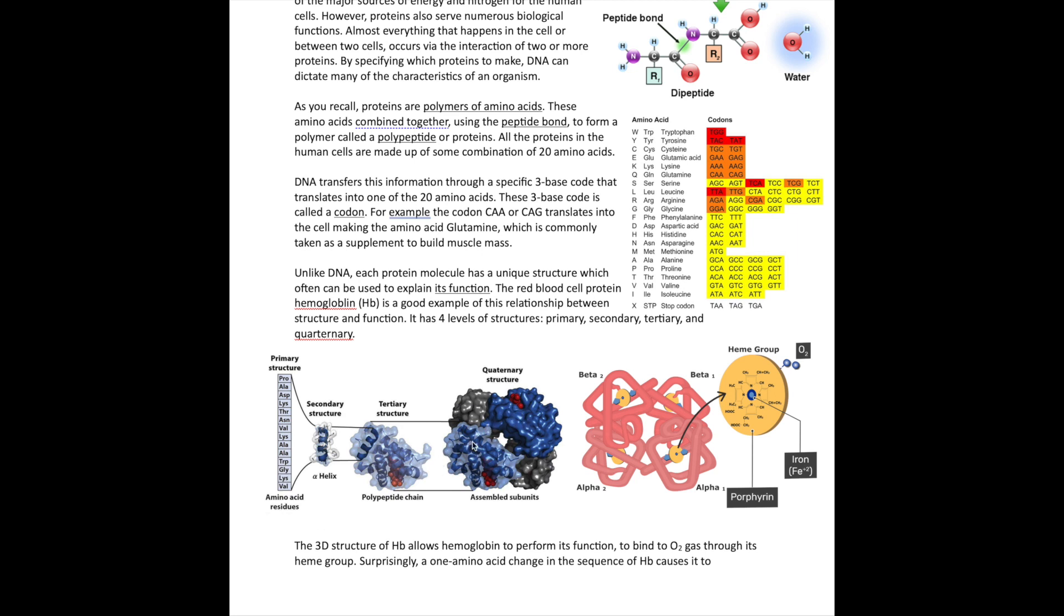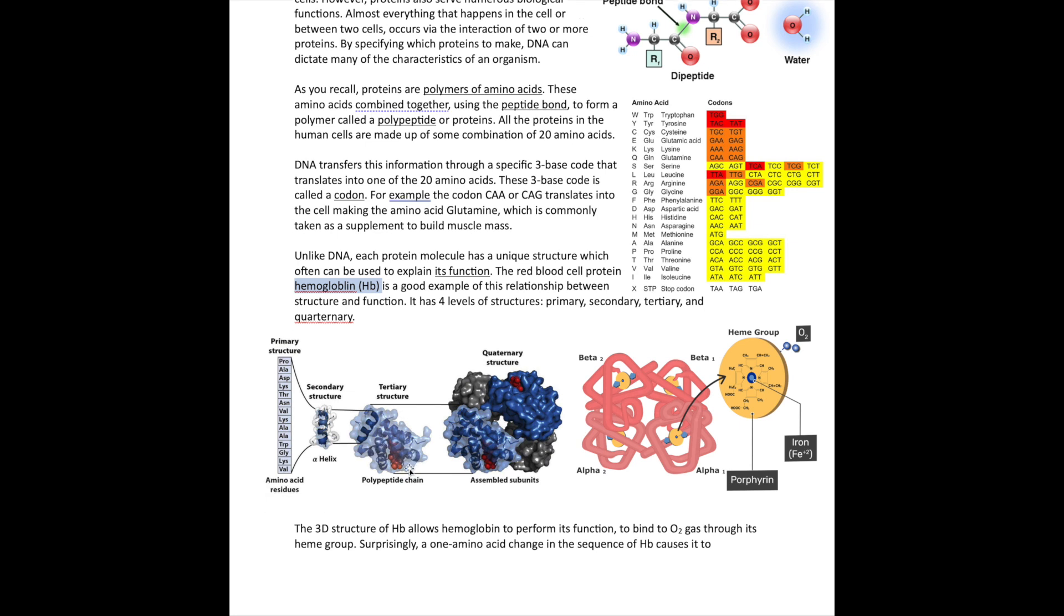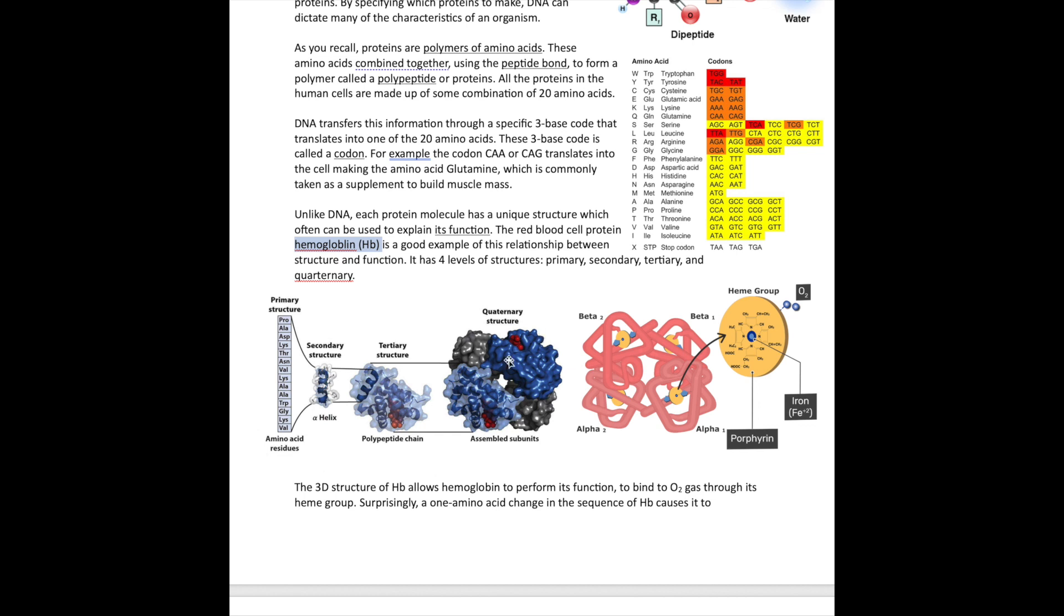In this particular protein, hemoglobin, a protein found in red blood cells that's responsible for carrying oxygen, each protein consists of four subunits. Each subunit is one of these molecules. As you can see, it's a very complex molecule containing a lot of different atoms. The three-dimensional structure often tells you how the protein will work, what its function will be.